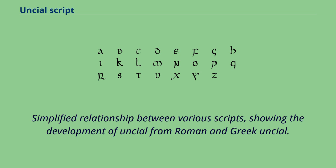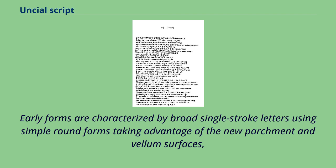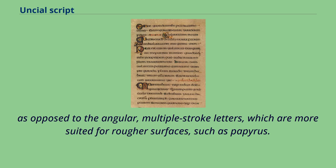The simplified relationship between various scripts shows the development of Uncial from Roman and Greek Uncial. Early Uncial script most likely developed from late rustic capitals. Early forms are characterized by broad, single-stroke letters using simple round forms, taking advantage of the new parchment and vellum surfaces, as opposed to the angular, multiple-stroke letters which are more suited for rougher surfaces such as papyrus.